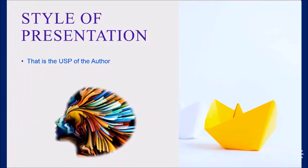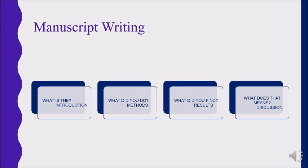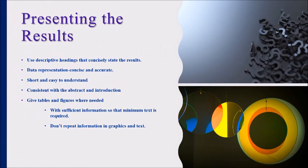Next is the style of presentation. The style of presentation is the USP of the author and depends upon the various journals. However, there are some specifications for writing papers. There are four questions to know while writing the manuscript: What is the introduction? What did you do — methods? What did you find — results? What does that mean — discussion? While writing the results, use descriptive headings that concisely state the results. Data representation should be concise, accurate, short and easy to understand, consistent with the abstract and introduction. Give tables and figures where needed, with sufficient information so that minimum text is required. Don't repeat information in graphics and text.